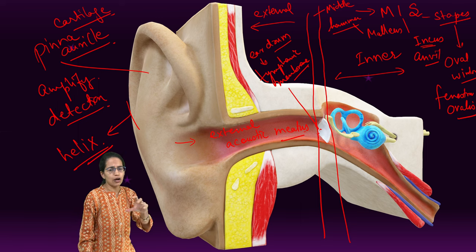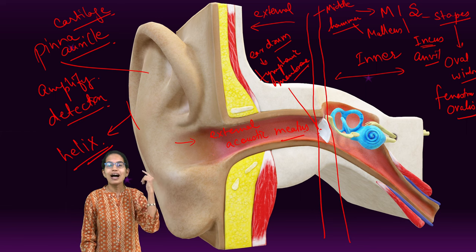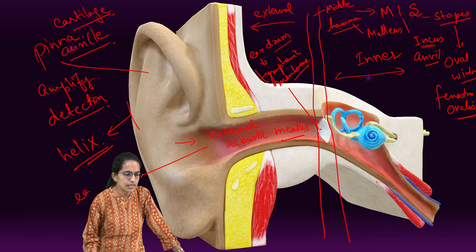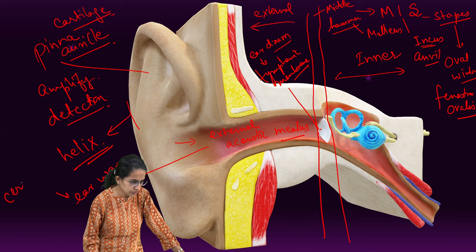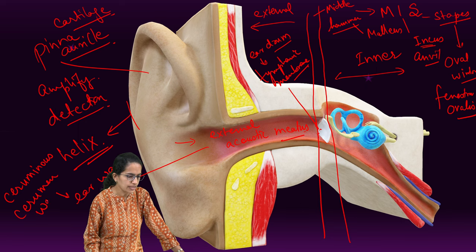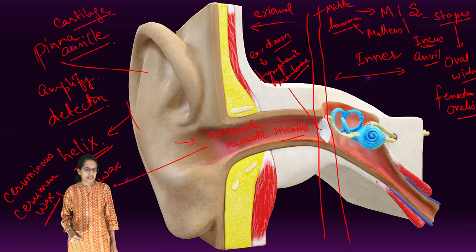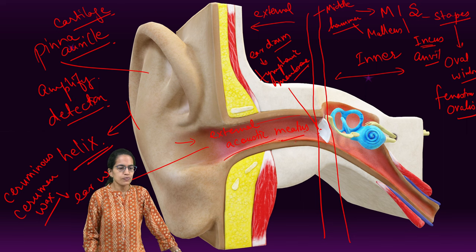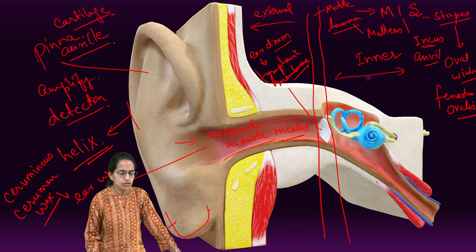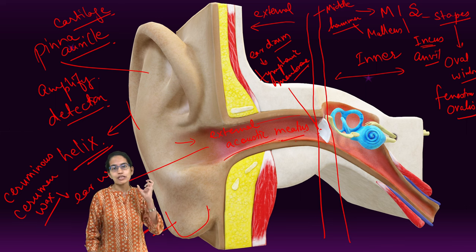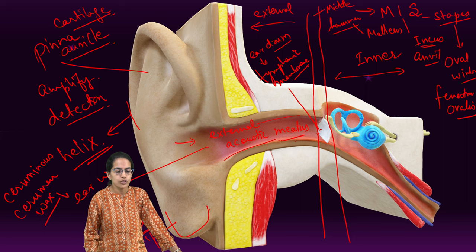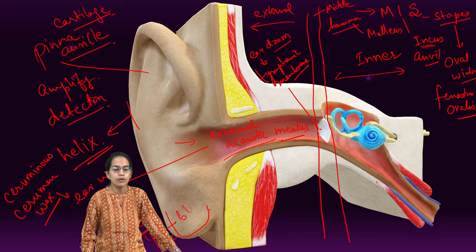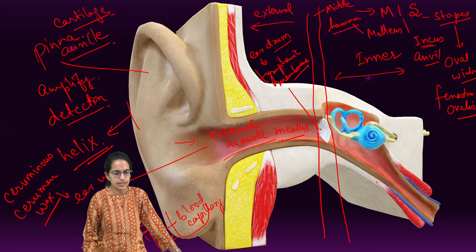The external acoustic meatus is the passage where ear wax is generated. This ear wax is secreted from a gland known as the ceruminous gland, and it secretes cerumen, which is the ear wax. This ear wax deposits around the external acoustic meatus. The lower part of the external ear is known as the lobule, which is fat-rich, containing a lot of adipose tissues and blood capillaries.